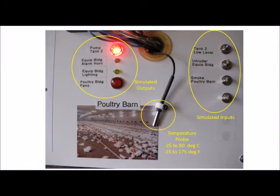This model of EasySwitch is equipped with a temperature probe. Its rating is minus 25 to 80 degrees C, or minus 15 to 175 degrees Fahrenheit. It is being used here to simulate the temperature inside a poultry barn.